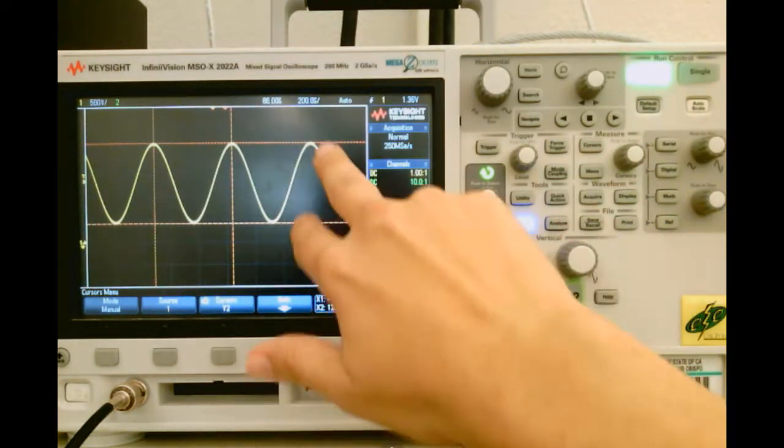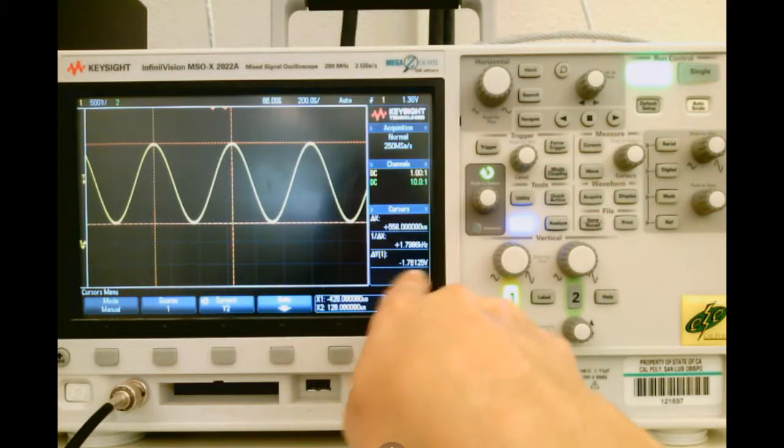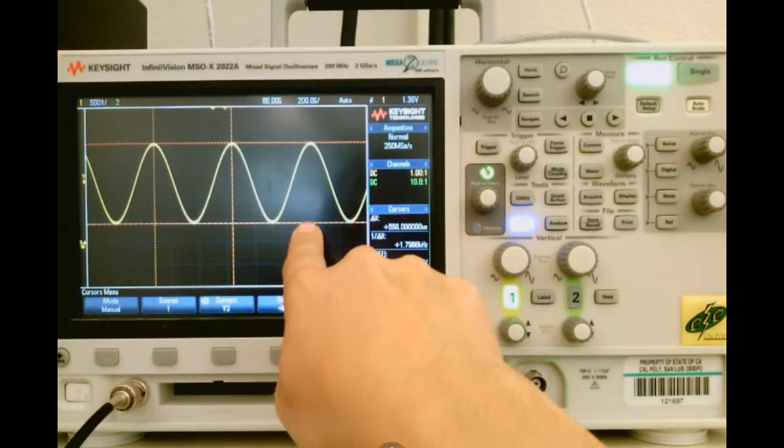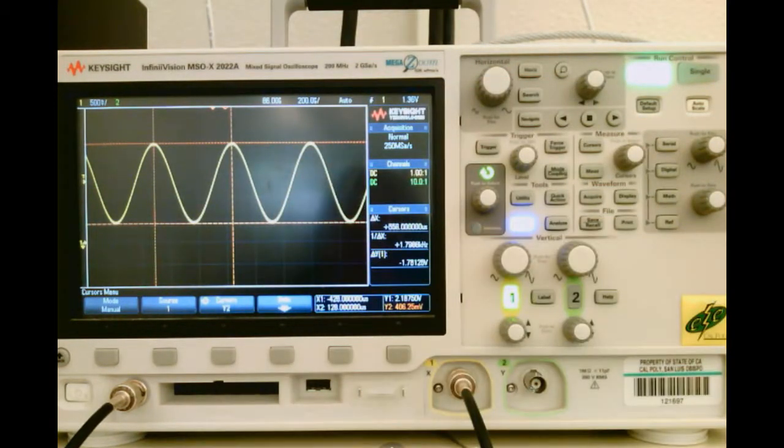So my peak-to-peak value, or the change in Y, is 1.78 volts. It's showing negative just because my Y2 is below Y1, but the absolute value between them is still 1.78 volts.